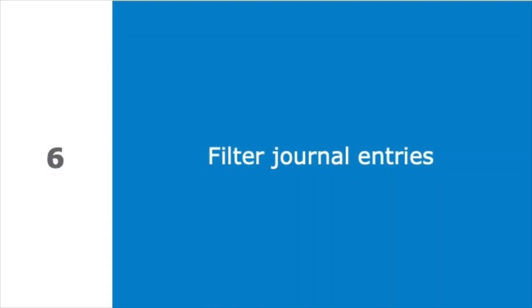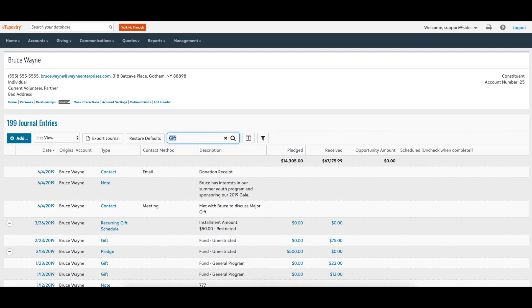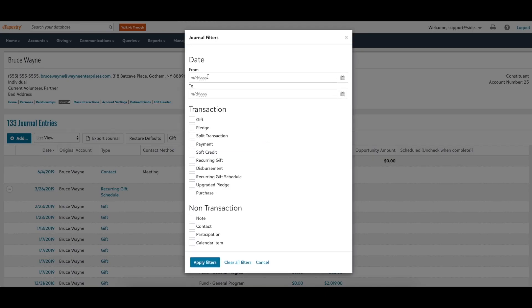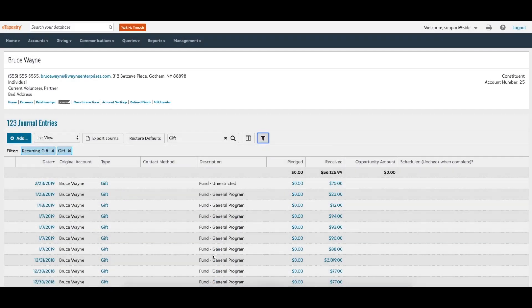Sometimes it's difficult to find a specific journal entry when an account's journal contains hundreds of entries — especially when you need to add a payment to a pledge, edit an event attendance tracker, or update a journal contact with notes. The journal search is a simple solution. At the top of the journal screen there is an area for filtering the journal. Select 'More Options' and use the advanced search features to filter by date, type, and even keyword.